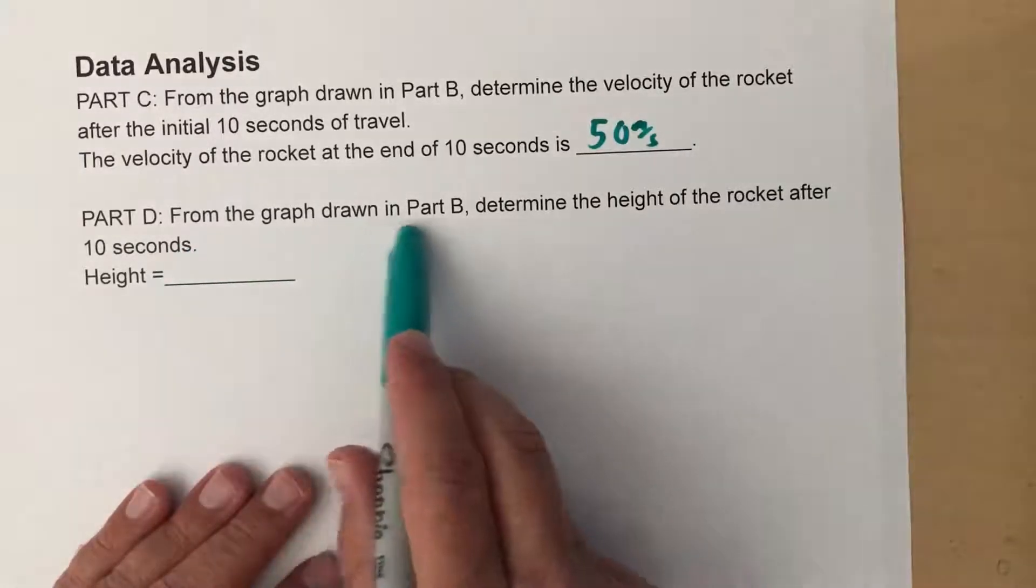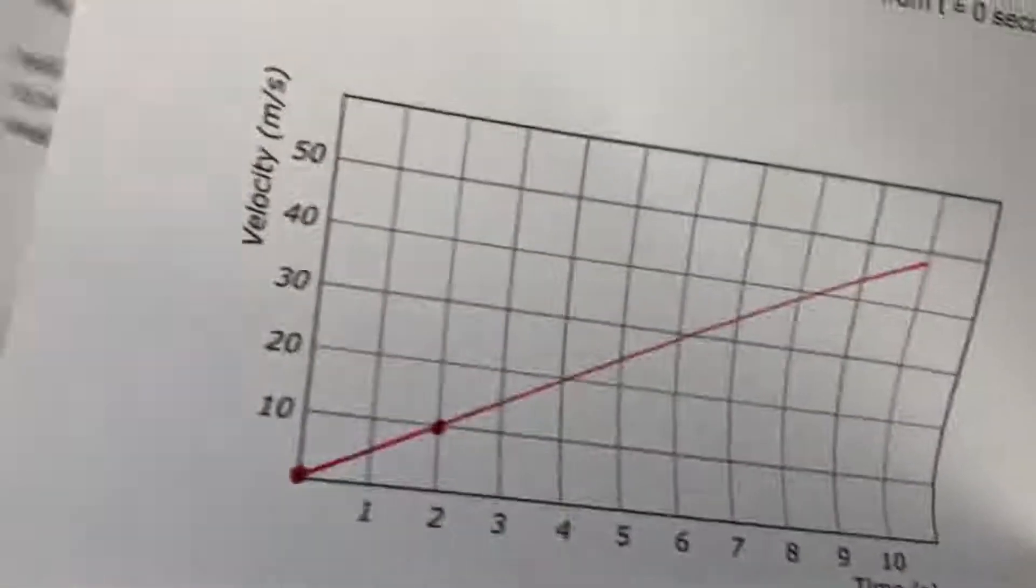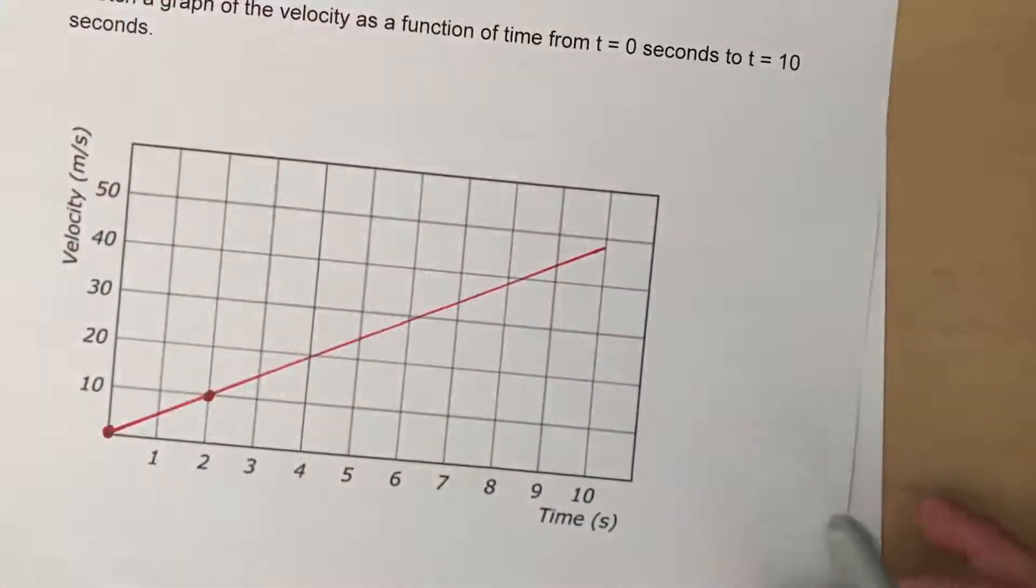Part D says from the graph drawn in part B determine the height of the rocket after 10 seconds. How high it is deals with how much area there is under the curve.